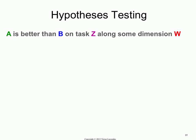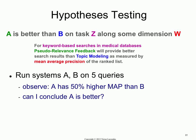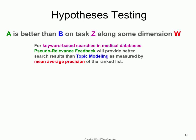Remember how we started this lecture — we started by saying that when you're doing research, ideally you should be formulating a hypothesis. All of your research has to boil down to a single statement like that. And that statement could look something like: for keyword-based searches in medical databases, one technique is going to give better results than another technique as measured by the following metric.